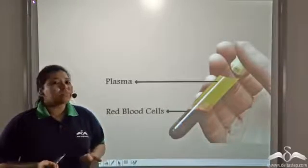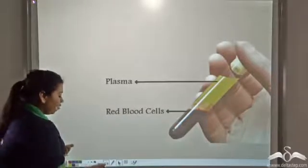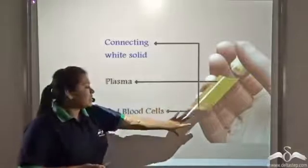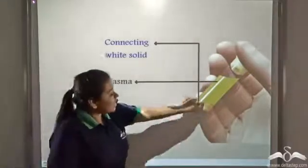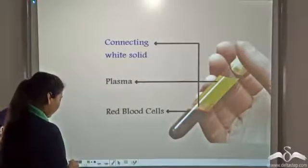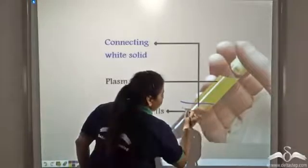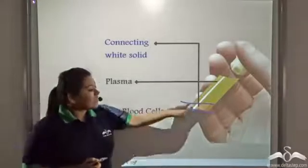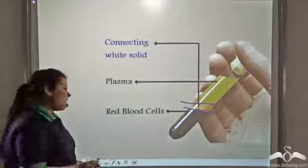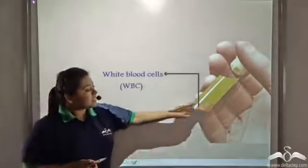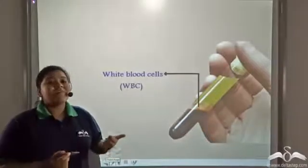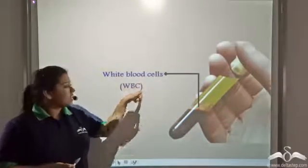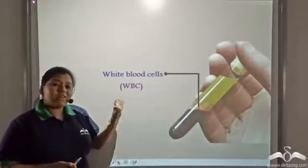So what provides protection to our body? Notice that between the layer of plasma and the layer of red blood cells is a connecting white solid layer. This layer is made up of white cells, and since it is white in colour, the cells forming this layer are known as white blood cells, or in short, WBC.